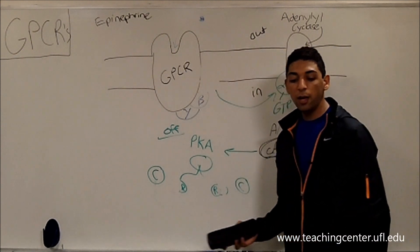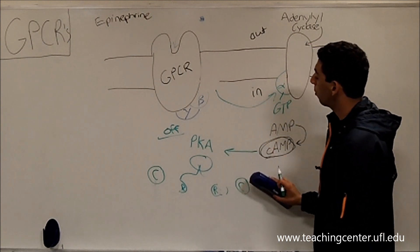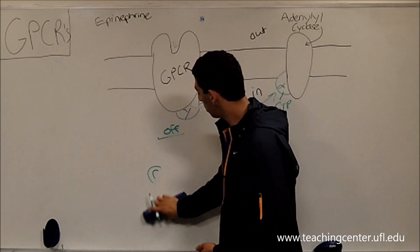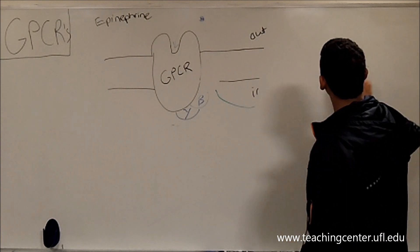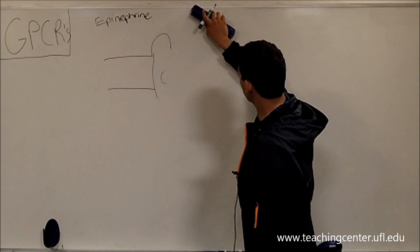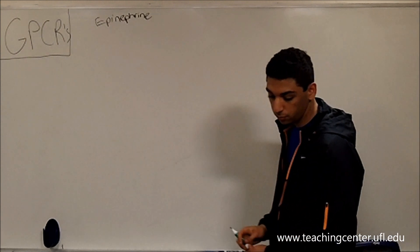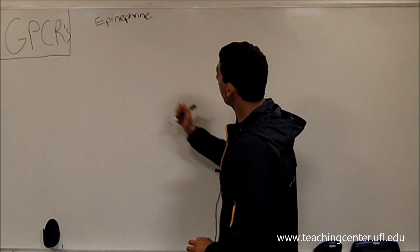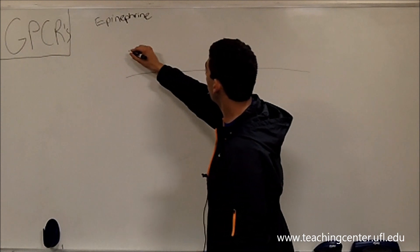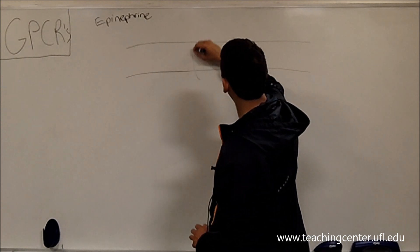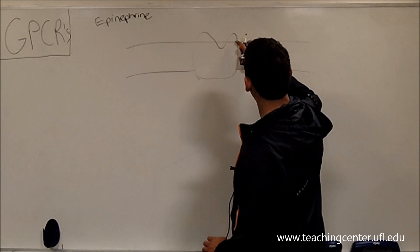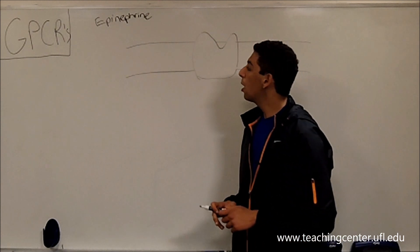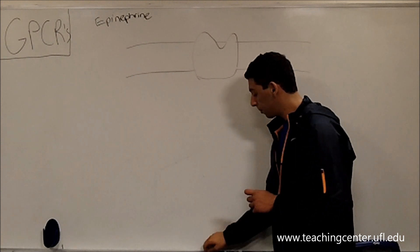Of course, we have ways of regulating this pathway, which are really important when it doesn't quite happen the way it's supposed to. So we're going to talk next about regulating G-protein-coupled receptors. We've got the same membrane and the same G-protein as before.